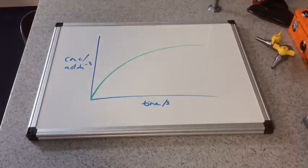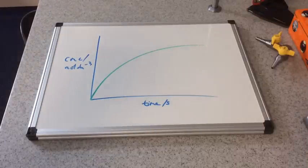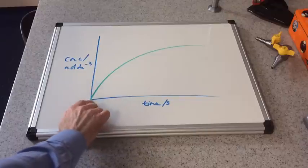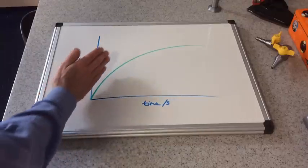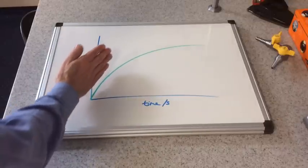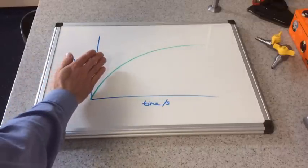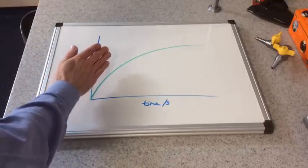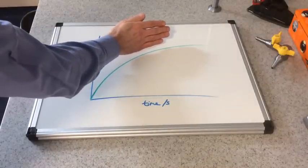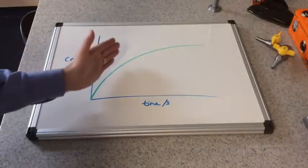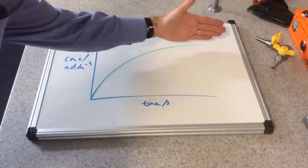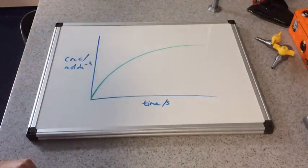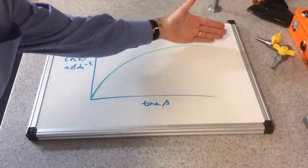And of course that's how the concentration time graph would look like for the products of a reaction. So at the start of a chemical reaction you have no products. We started at the origin. The production of products is at its highest rate, the fastest. At the start we have this steep gradient here. Starting to slow down at this point in the reaction. And then eventually the reaction stops. The time's still ticking along. But there are no more products being produced. Until the rate at that point would of course be zero.